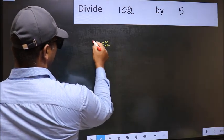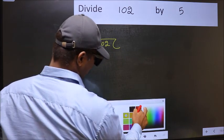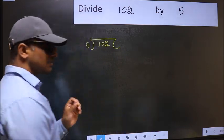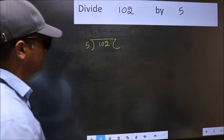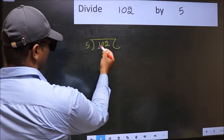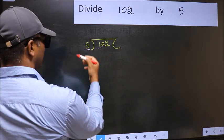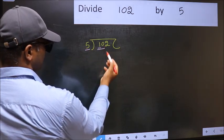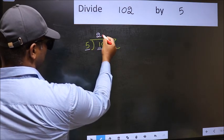102 and 5 here. This is your step 1. Next, here we have 1 and here 5. 1 is smaller than 5, so we should take two numbers: 10. When do we get 10 in five table? Five times 2 is 10.